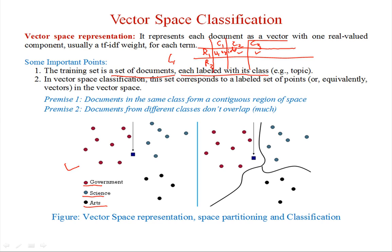Now suppose a new document represented by an arrow comes — how do we classify it? In Rocchio classification, we calculate the centroid of each entire document collection and check whether this document is most similar to which class. We put the document into the class whose centroid is closest — in this case, the government class.